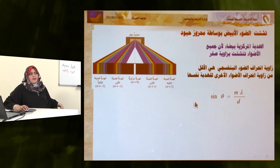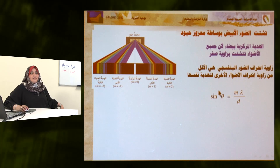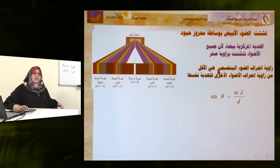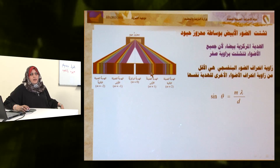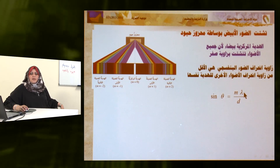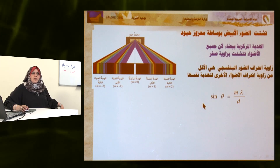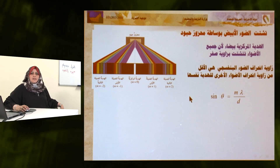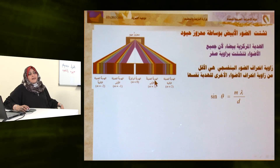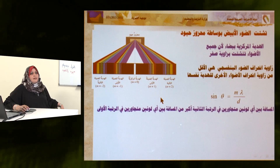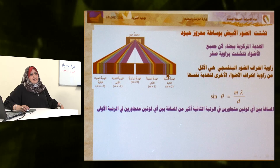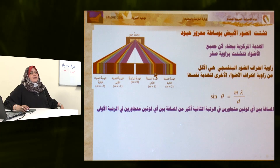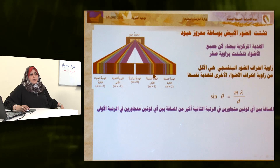نفسر ذلك بمعادلة sinθ = mλ/d: العلاقة بين زاوية الانحراف والطول الموجي علاقة طردية. الضوء البنفسجي هو أقل الأطوال الموجية بين الألوان، فتكون λ صغيرة وبالتالي sinθ والزاوية صغيرة. أيضاً المسافة بين أي لونين متجاورين في الرتبة الثانية أكبر من المسافة بين أي لونين متجاورين في الرتبة الأولى.